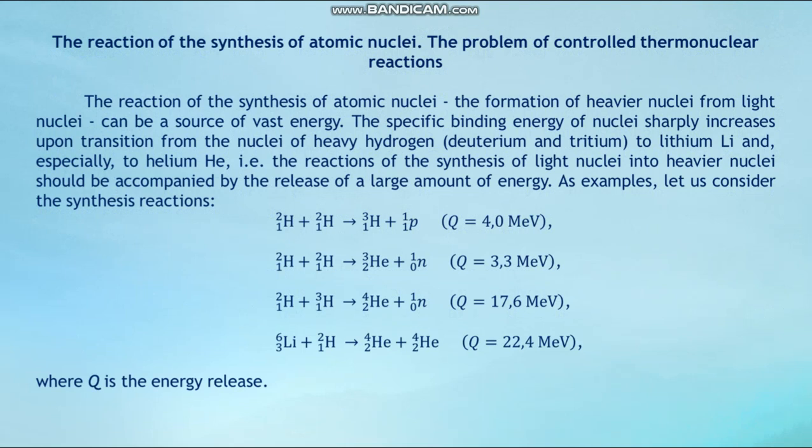The reaction of the synthesis of atomic nuclei — the formation of heavy nuclei from light nuclei — can be a source of vast energy. The specific binding energy of nuclei sharply increases upon transition from heavy hydrogen, lithium to helium. It is the reactions of the synthesis of light nuclei into heavy nuclei that should be accompanied by the release of large amounts of energy. As an example, let us consider the synthesis reactions: first, second, third, and fourth reactions, where Q is the energy release.